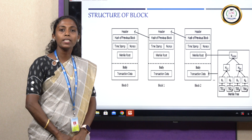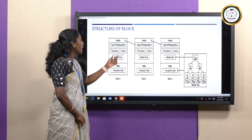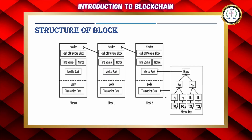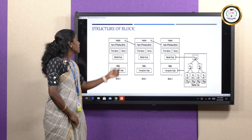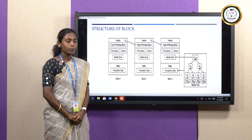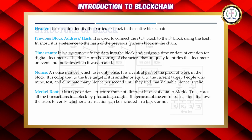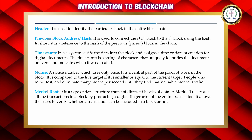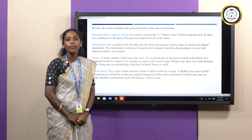All data stored in a block is cryptographically secured. The elements in a block are the header and the body — there are two parts. In the header there are elements: the hash of the previous block, timestamp, nonce, and the Merkle tree root. The body part contains the transaction data. The header element is the identity of each block, with a header ID used to identify each block.